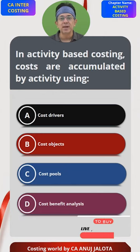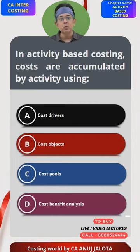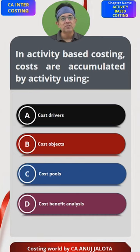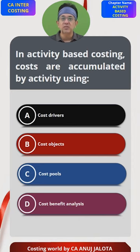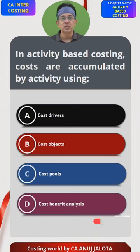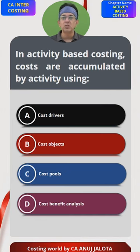Think about an activity like ordering costs. Ordering costs will not involve only one small person — it will involve many things to happen. All these costs related to ordering can be spread over various departments or various people. So if you have to find out the cost of the ordering activity, you will have to combine all those costs which are related to the number of orders.